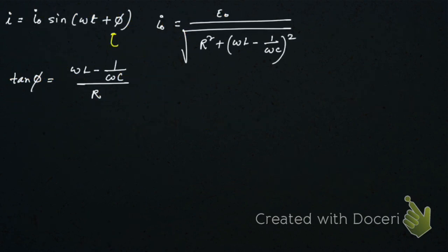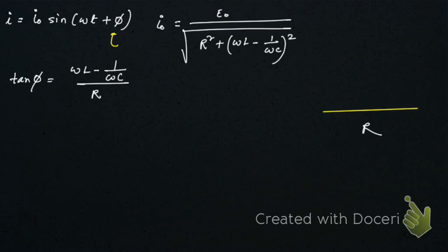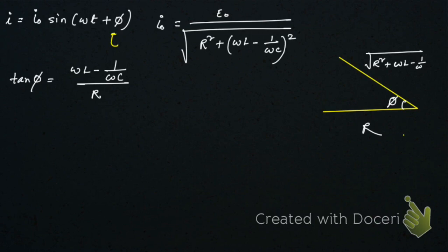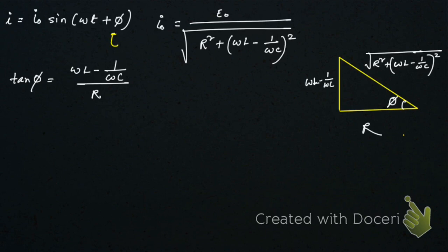Now, if φ is the phase angle, we can draw a phasor triangle. One side is R, the hypotenuse is the impedance √(R² + (ωL − 1/ωC)²), and this is the angle φ. The opposite side is (ωL − 1/ωC). So you can draw this diagram from the expression.